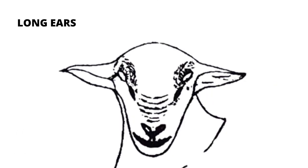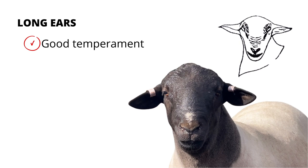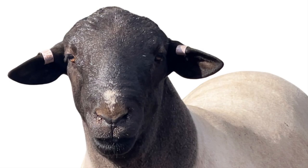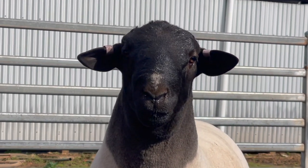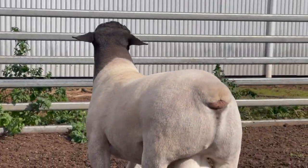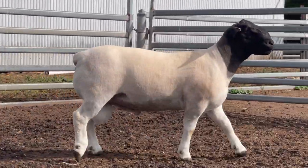Then we can go to the ears. Long ears are directly correlated to good temperament and also good bone structure, because the ears are cartilage and cartilage is part of the bone structure. And that is the reason why we always start at the head — if we can quickly recognize a good quality head, it will make it so much easier for you to identify quality rams.